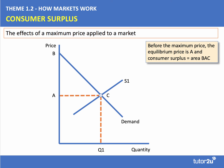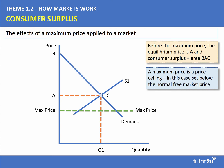Here's a market for a product. Initially the price is A, the equilibrium is at C, and the quantity bought and sold is Q1. Before the maximum price, the equilibrium price is A and the area of consumer surplus is BAC. Now if we put a maximum price on the market — a price ceiling — the price cannot legally rise above it, and for it to be effective a maximum price has to be set below the normal free market price.